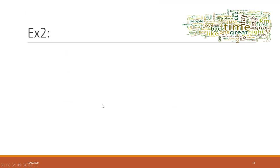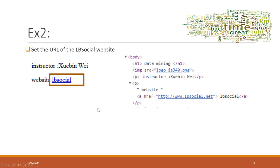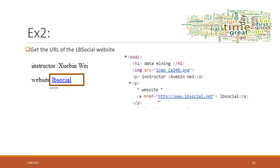Now let's look at the second exercise. Find the URL of this website. Remember the URL is not the visible part — it should be the HTTP link. How can you find the URL of that website? Pause the video and try it on your own.